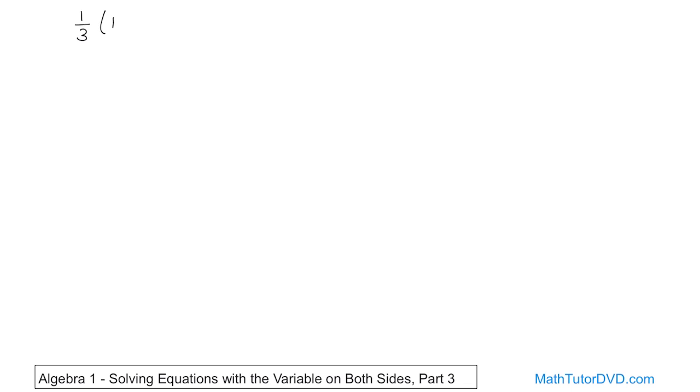What if we have 1/3 times (12 - 6x) equals 4 - 2x? And we want to obviously solve for x.